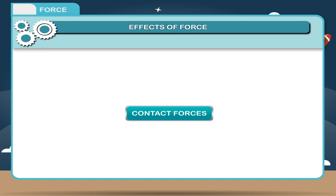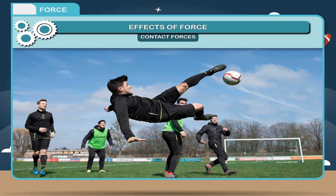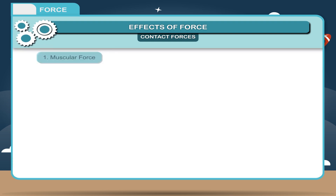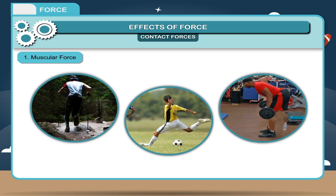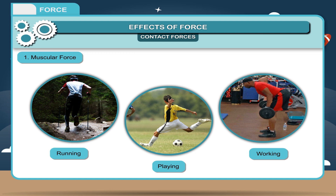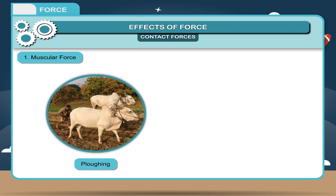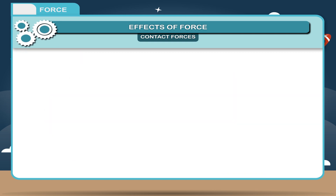Contact forces are those types of forces applied to two objects when they have physical contact with each other and interact. Muscular force: The force exerted by the muscles of the human body is called muscular force. We use our muscles during running, playing, and working. Animals also exert muscular force to do heavy work, such as ploughing or pulling a cart.